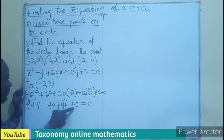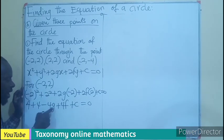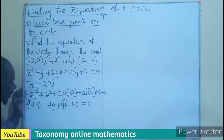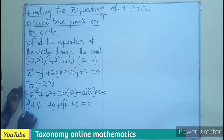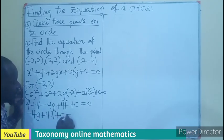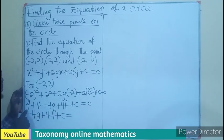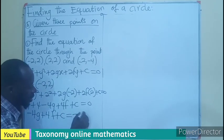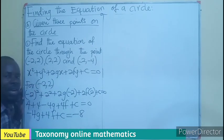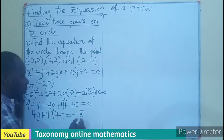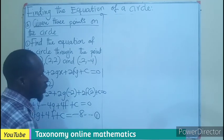Since this is an equation with unknown variables, we maintain them and send the constants to the other side. That will become minus 4g plus 4f plus c equals negative 8. We label this as Equation 1.